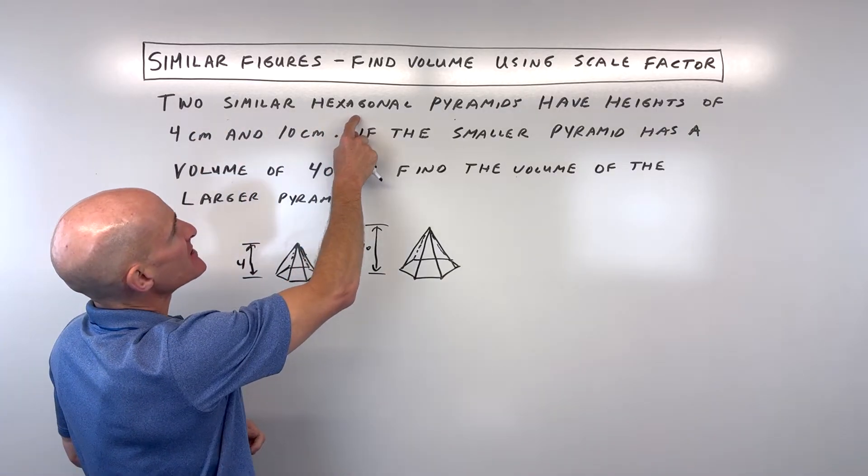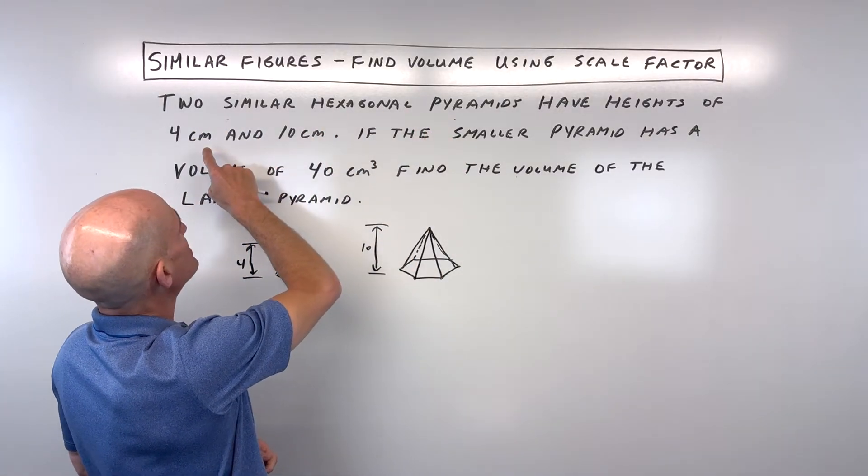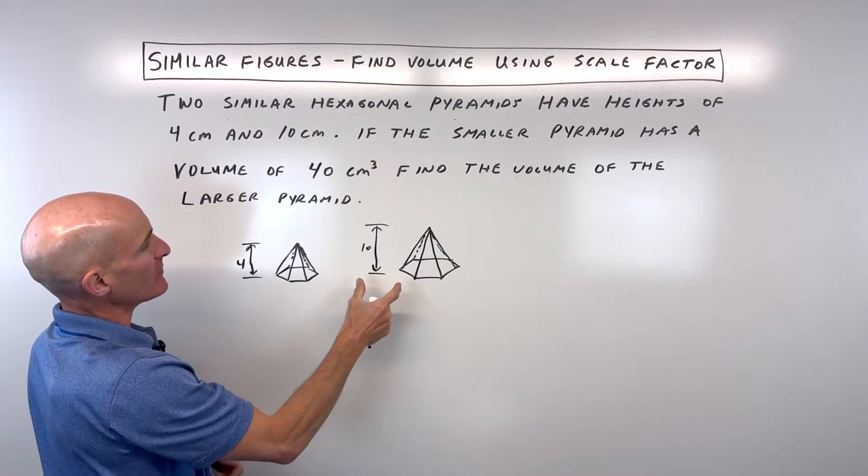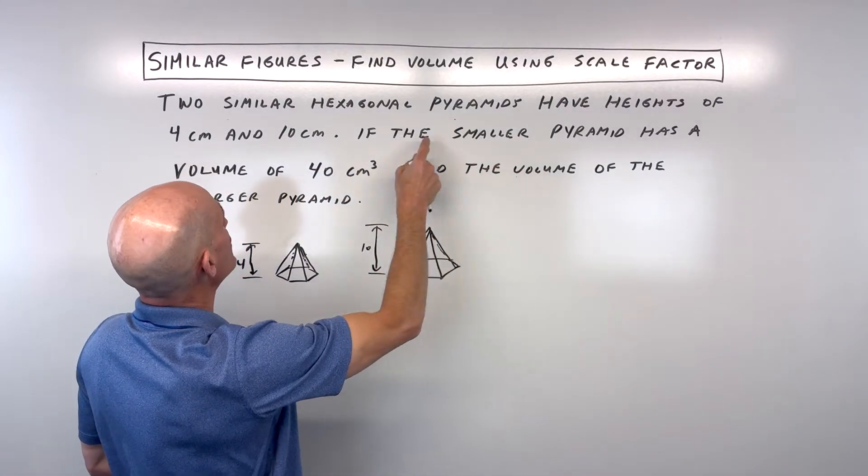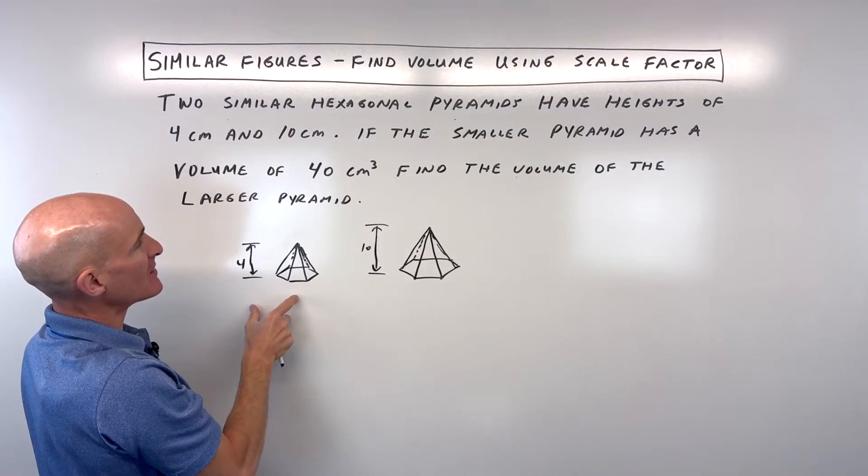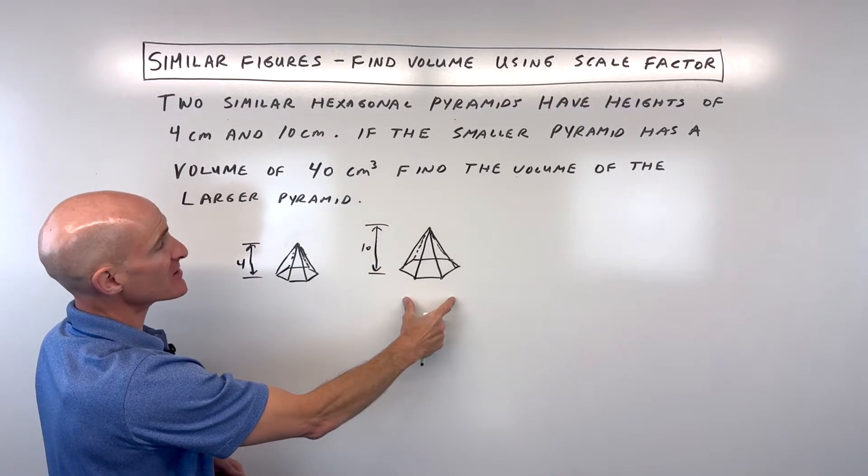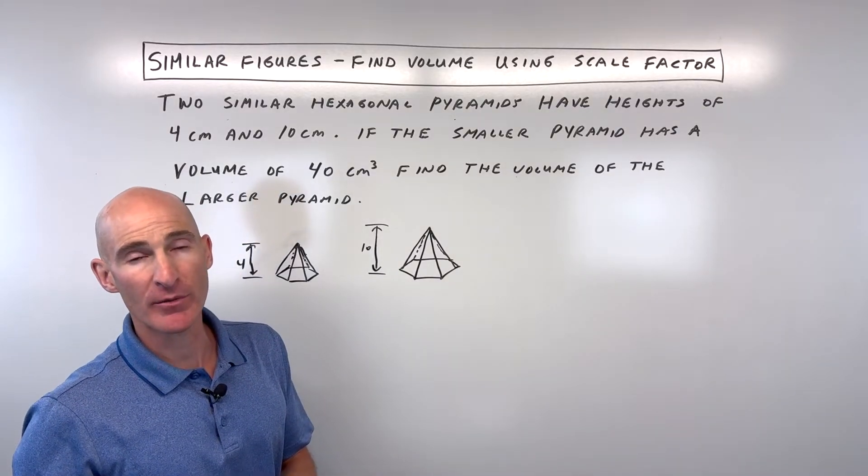We've got two similar hexagonal pyramids that have heights of 4 centimeters and 10 centimeters. If the smaller pyramid has a volume of 40 centimeters cubed, find the volume of this larger pyramid.